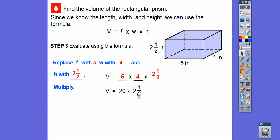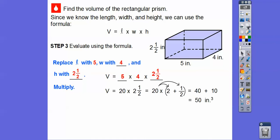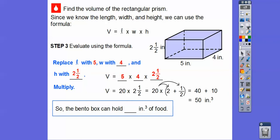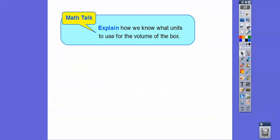Then 20 times two and a half is the same as 20 times two plus a half. We can distribute: 20 times two is 40, and 20 times one half is 10 — since a half of 20 is 10. Then 40 plus 10 gives us 50 inches cubed. So the bento box can hold 50 cubic inches of food. The volume is 50 inches cubed.